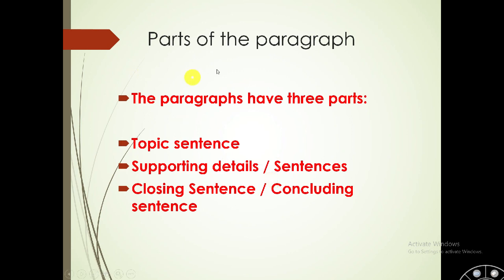There are mainly three parts of a paragraph. عادة هناك ثلاث أجزاء للفقرة أو الـ paragraph. The first one is called the topic sentence. The second one is called supporting details or supporting sentences. And the third is called closing sentences, or sometimes we call it concluding sentences. We have two types: supporting ideas and supporting sentences, and we will see now in these slides.